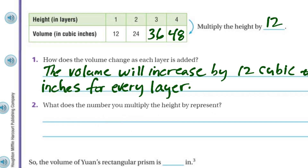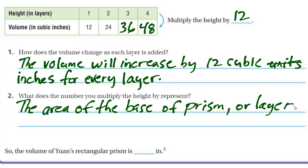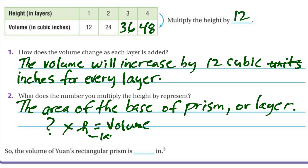Now we move on to the next problem. What does the number you multiply the height by represent? That's like the area we were talking about — the area of the base of the prism, or layer. We have that first layer, so that's the number — some number — we're going to multiply it by the height, which ultimately gives us the volume. This is almost like the area times the height, which is the layer.